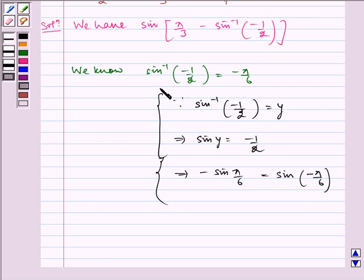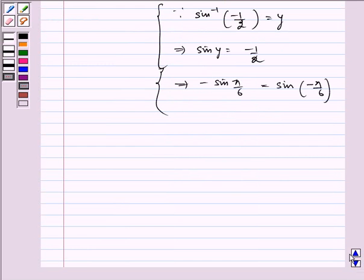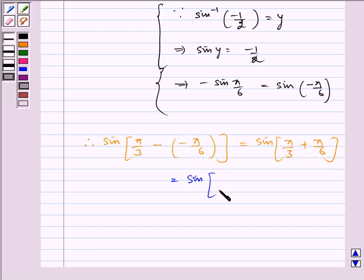Therefore, now we get sin of pi by 3 minus minus pi by 6 is equal to sin of pi by 3 plus pi by 6, which is equal to sin of 3 pi by 6.